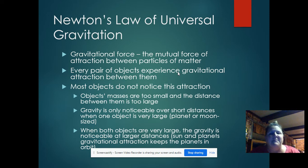Every pair of objects experience gravitational attraction between them. Most objects do not notice this attraction because the objects' masses are way too small and the distance between them is too large. Gravity is only noticeable over short distances when one object is very large, like a planet or a moon.